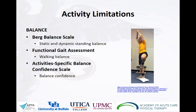It's also important to assess balance for people recovering from critical illness because this patient population has an increased incidence of injurious falls in the first year following hospital discharge. During the history, the physical therapist can determine if balance is a problem for the patient, and if so, identify the appropriate balance assessments to objectively quantify the balance impairments that may be present. The Berg Balance Scale is used to identify static and dynamic standing balance impairments. The Functional Gait Assessment can be used for walking balance impairments. The Activity-Specific Balance Confidence Scale is used for measuring balance confidence. We recommend using these three balance assessments due to their strong psychometric properties.